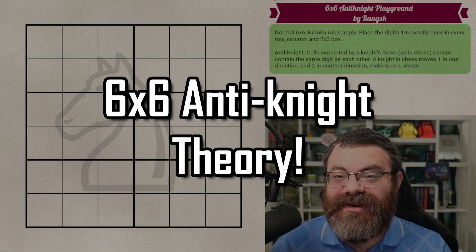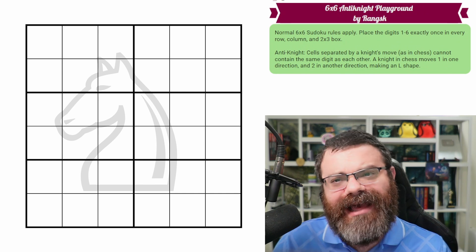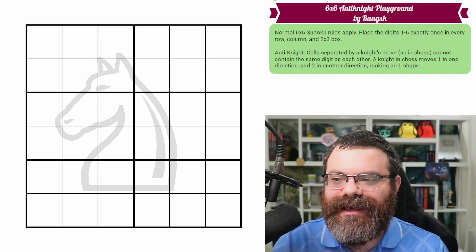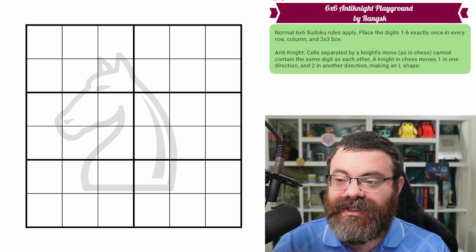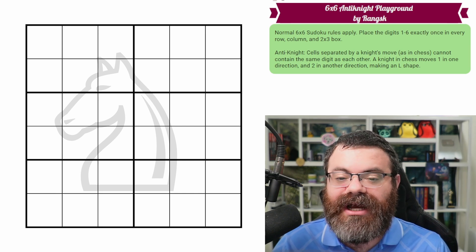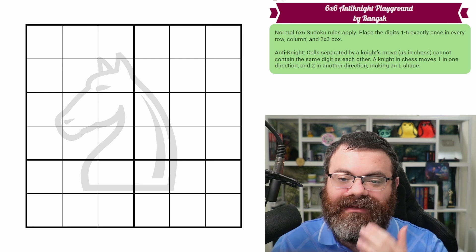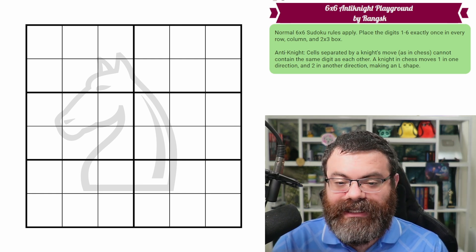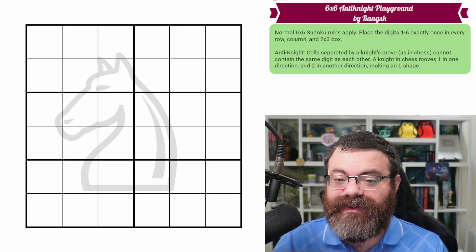I've got an interesting theory slash meta video for you. I'm not actually solving a puzzle, but it kind of is like solving a puzzle. And it's actually pretty elegant. So the context here is anti-knight in standard six by six Sudokus. Anti-knight is a constraint that's very popular in nine by nine Sudokus, but you might find it's a little bit less popular in six by six. And this might explain why — it's extremely limited, in an interesting way that's easy to remember and not that hard to prove.